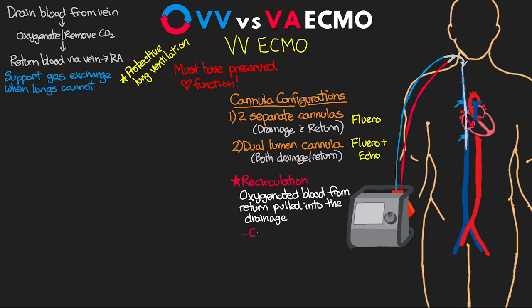Causes of recirculation include cannula configuration and positioning — the closer in proximity the two cannulas are, the more recirculation we'll see. Higher flow rates and cannula size can also impact this. Changes in intrathoracic, intracardiac, and intraabdominal pressure can impact this as well; increased pressure from a pneumothorax, tamponade, or increased abdominal pressure can impede venous return to the heart and lead to recirculation.